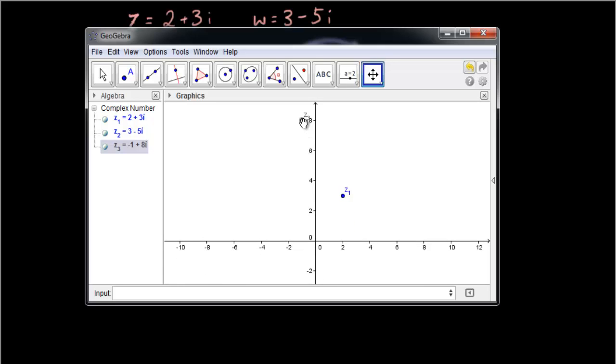Okay, so z3 has a coordinate of negative 1 on the x-axis and 8 on the y-axis, which is the imaginary axis.